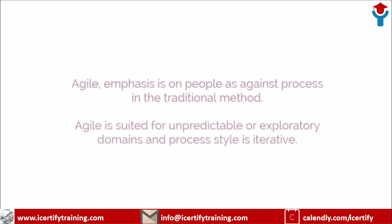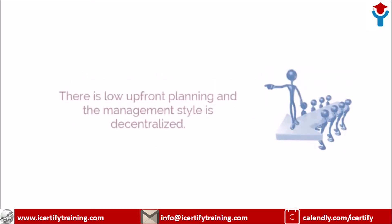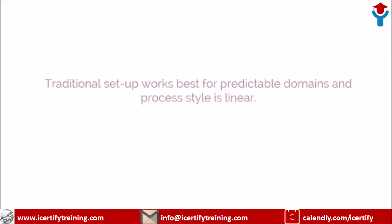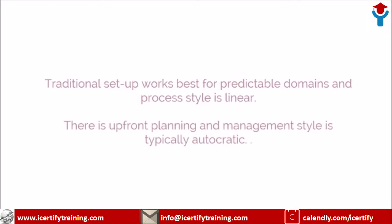Agile is best suited for unpredictable or exploratory domains, and the process style is iterative. There is low upfront planning, and the management style is decentralized. A traditional setup works best for predictable domains, and the process style is linear. There is a lot of upfront planning, and the management style is typically autocratic.